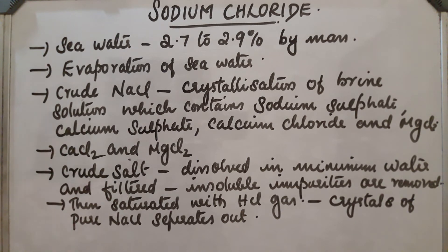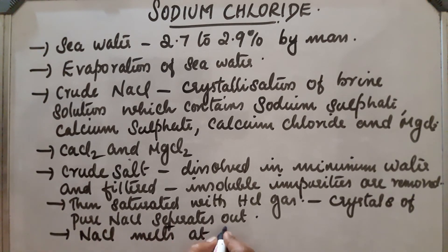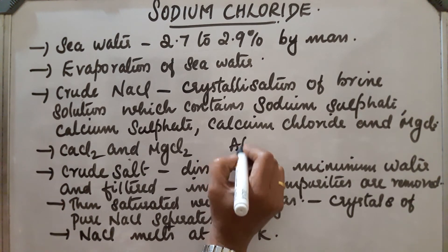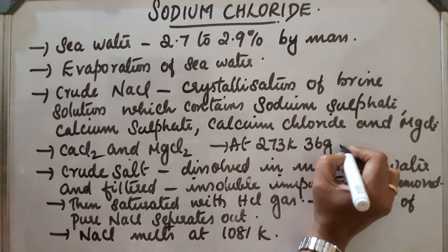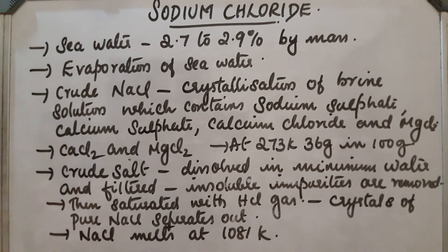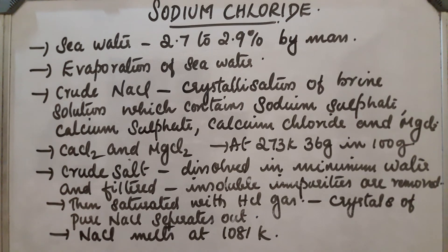The important properties of NaCl are: NaCl melts at 1081 Kelvin. Its solubility is 36 grams in 100 grams of water at 273 Kelvin. The solubility does not increase with an increase in temperature — it remains constant at 36 grams per 100 grams of water.